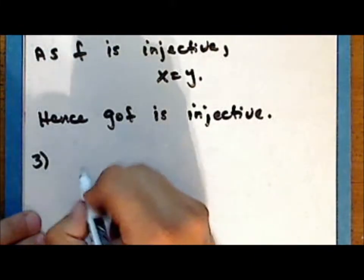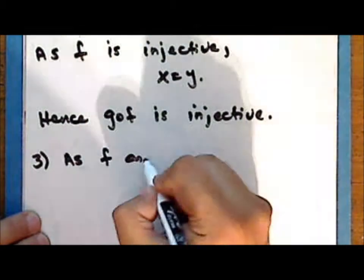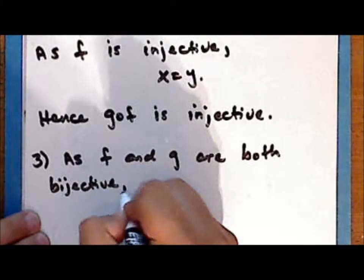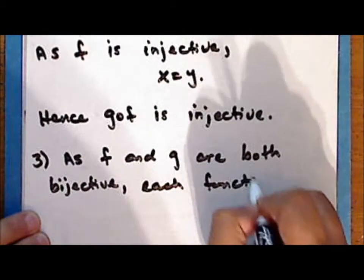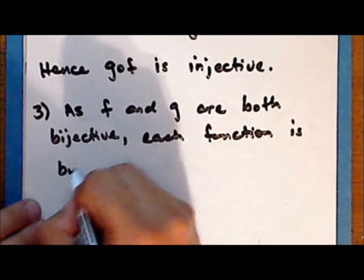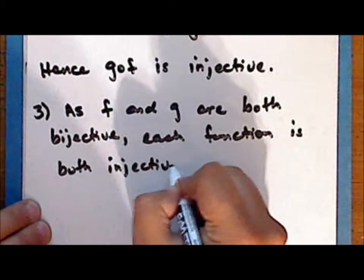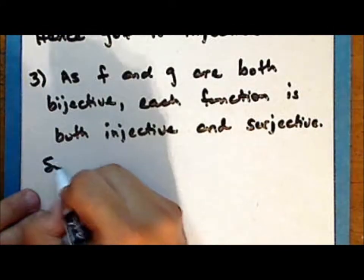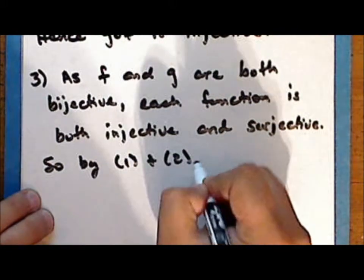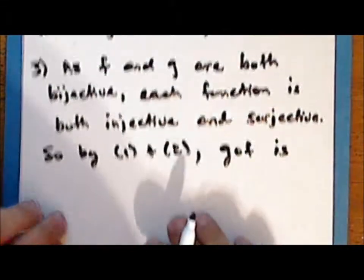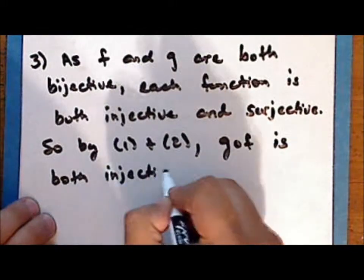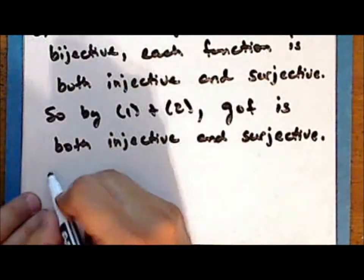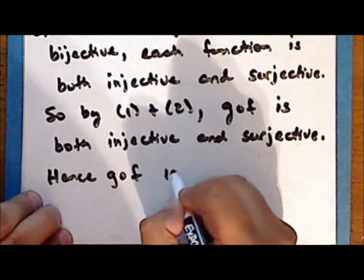For the third statement: since the functions f and g are both bijective, each function is both injective and surjective. By the first two statements, the composition g∘f is both injective and surjective, and hence the function g∘f is bijective.